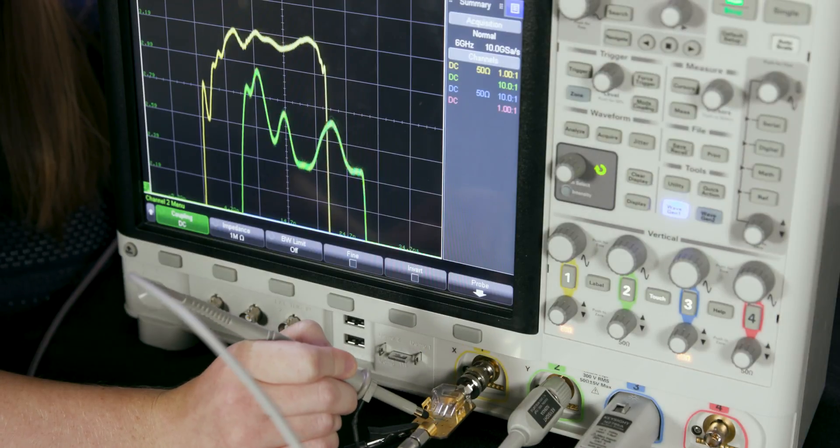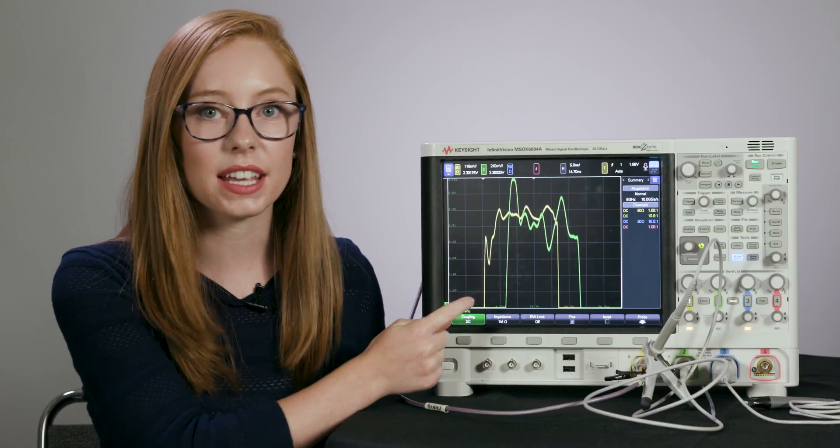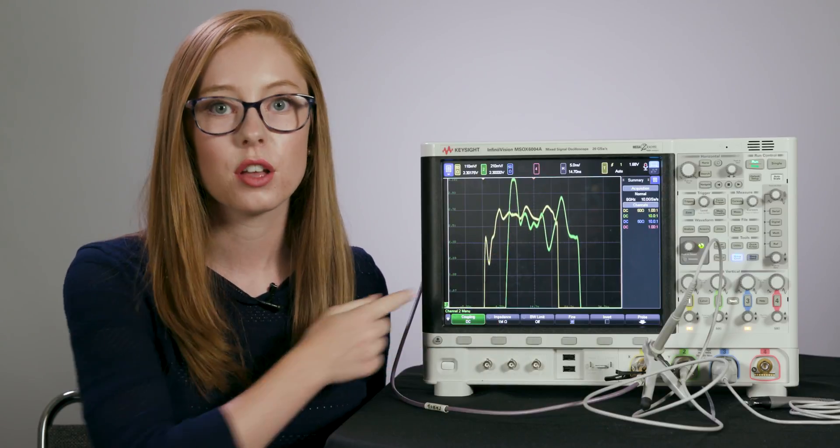The yellow trace is the signal as it exists on your device. And the green trace is what your oscilloscope sees through the passive probe. Clearly, these signals don't match. And this can be really misleading if you're making measurements on and evaluating a signal that looks nothing like the signal as it exists on your device.